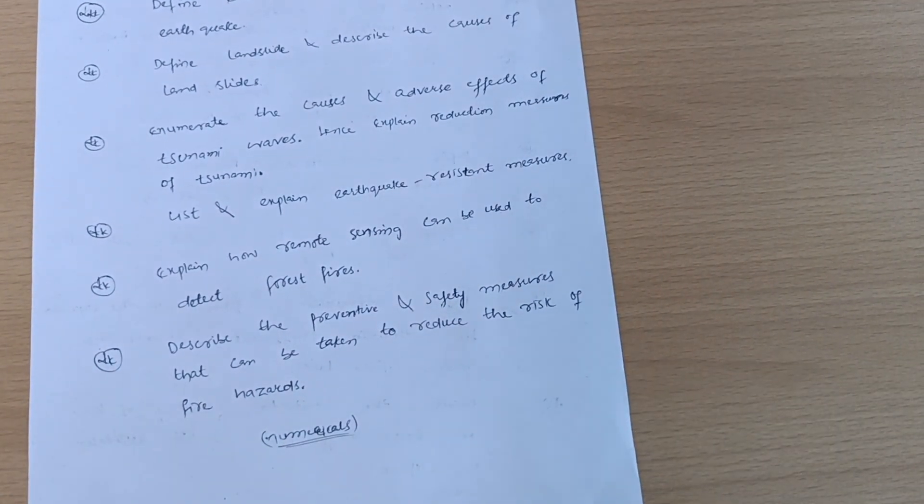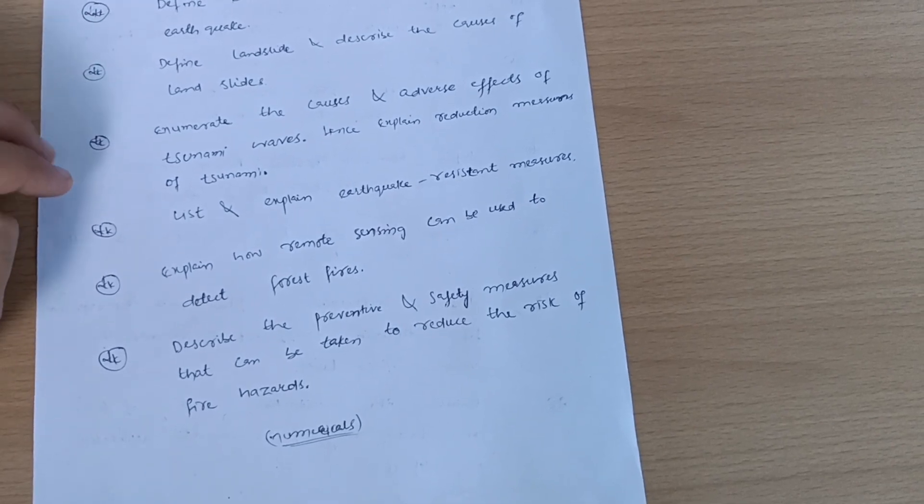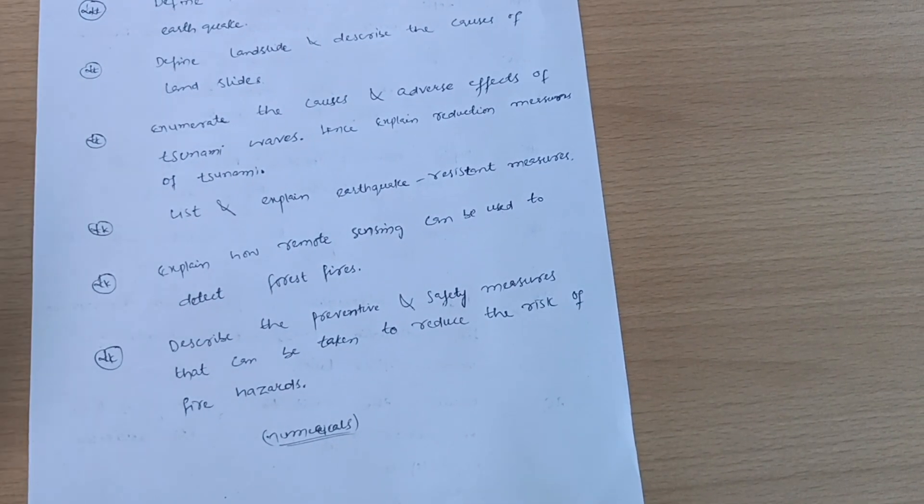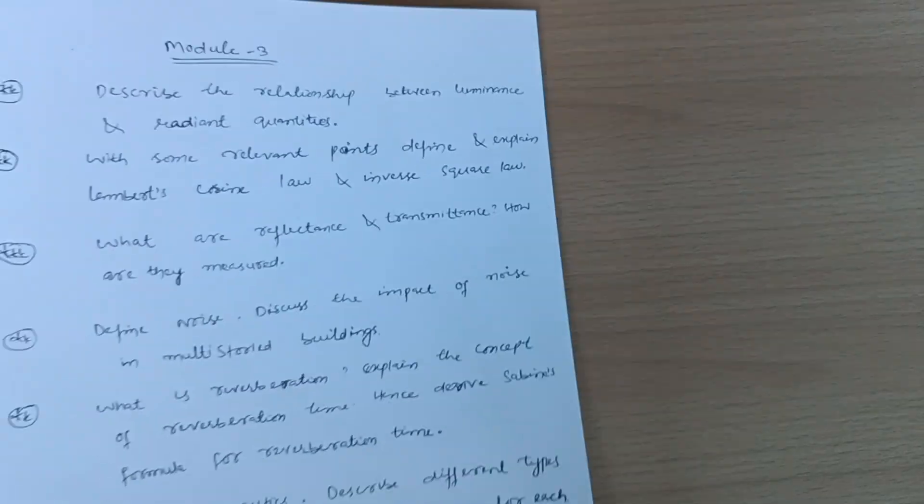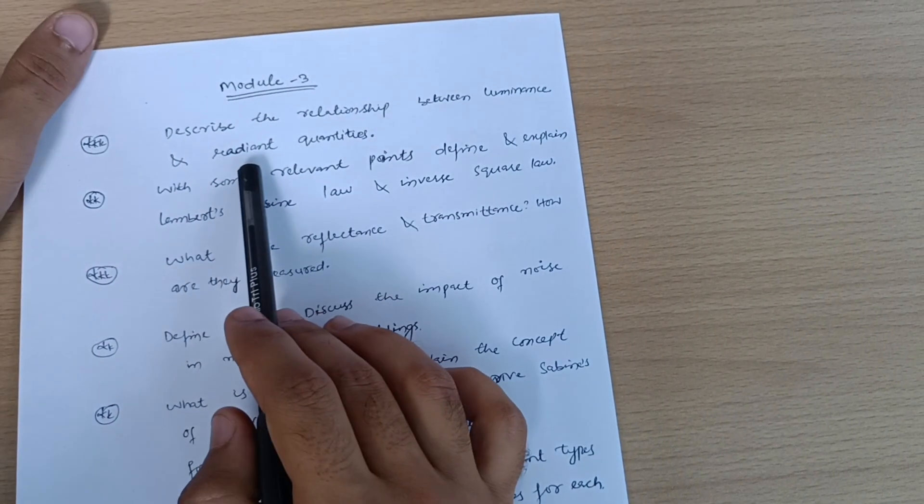As usual, I have told you there are intermixing of numericals and theoretical portions. Two questions will be from the theory in the first part and one numerical. In the or part there will be another two theory questions and one numerical part, so you should not leave the numerical part over there. Next is Module 3.